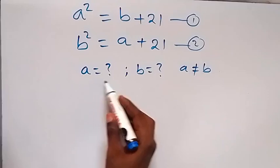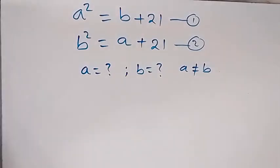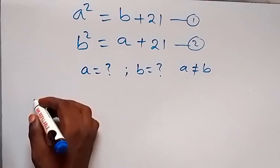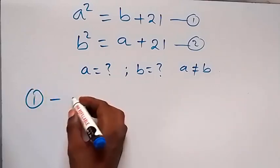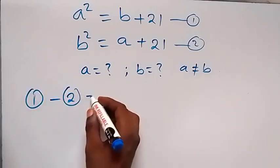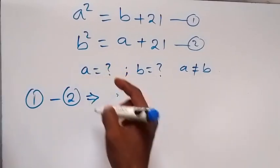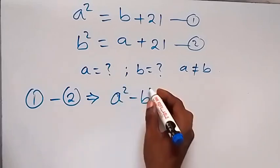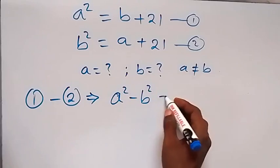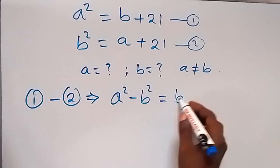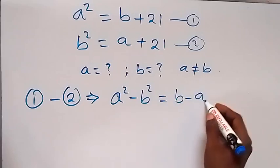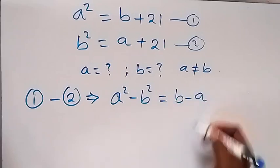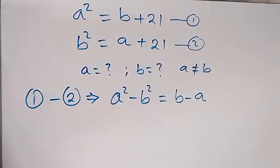We are finding the values of a and b, and a is not equal to b. Let's subtract equation 2 from equation 1. So equation 1 minus equation 2 gives us: a squared minus b squared on the left-hand side, equals b minus a, and 21 minus 21 becomes 0.